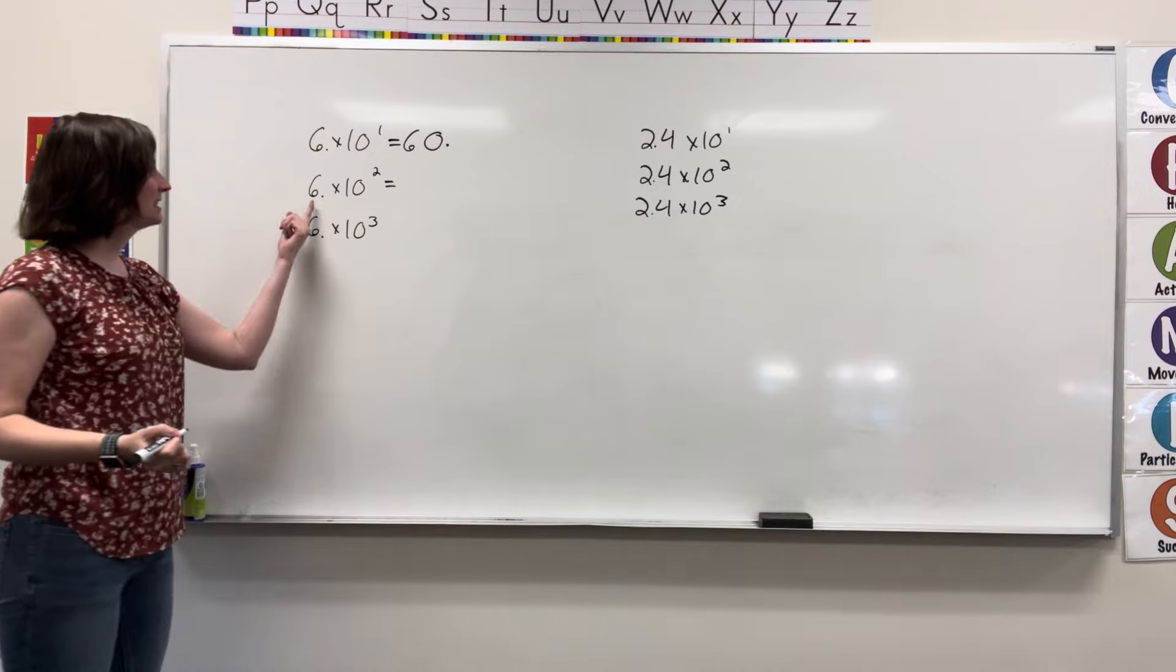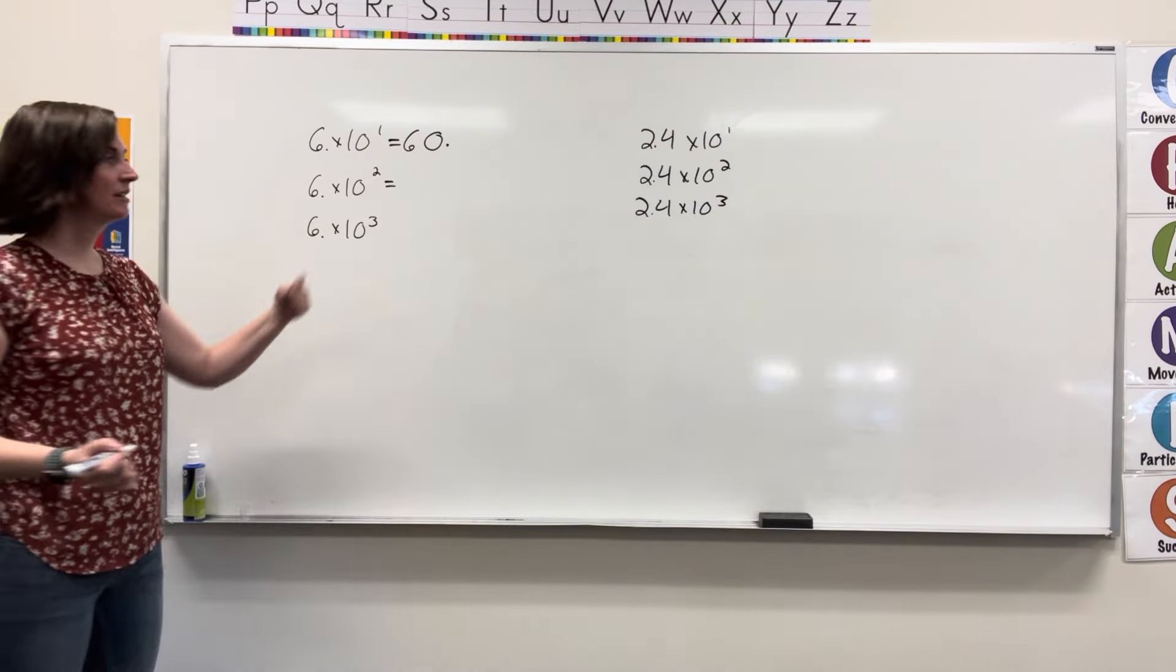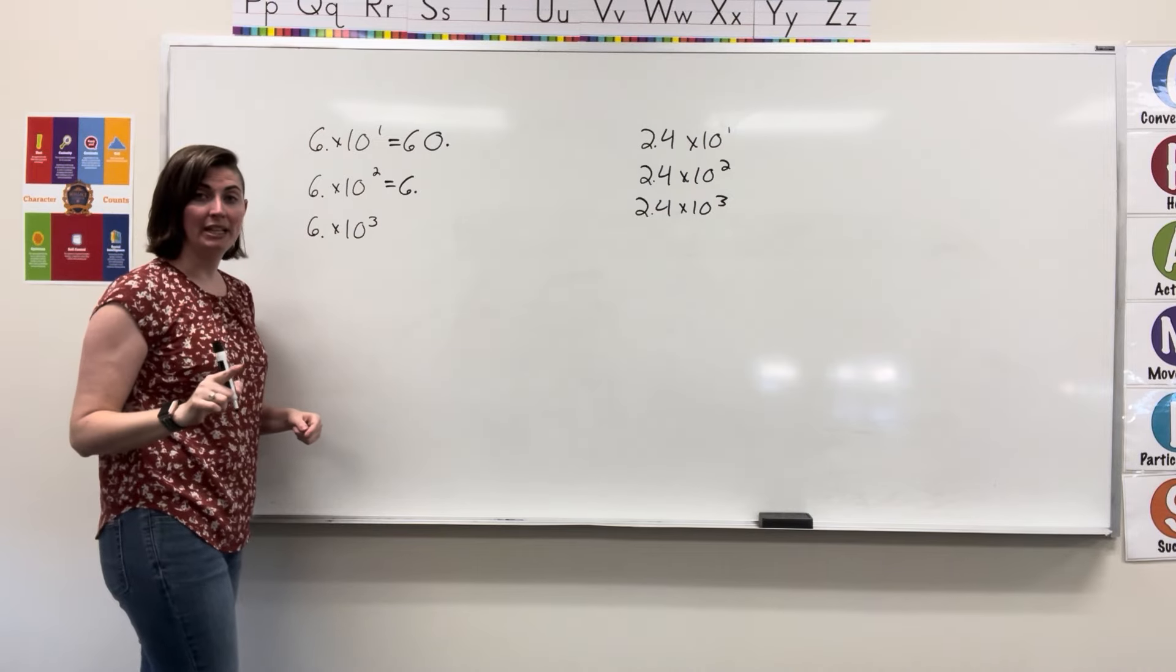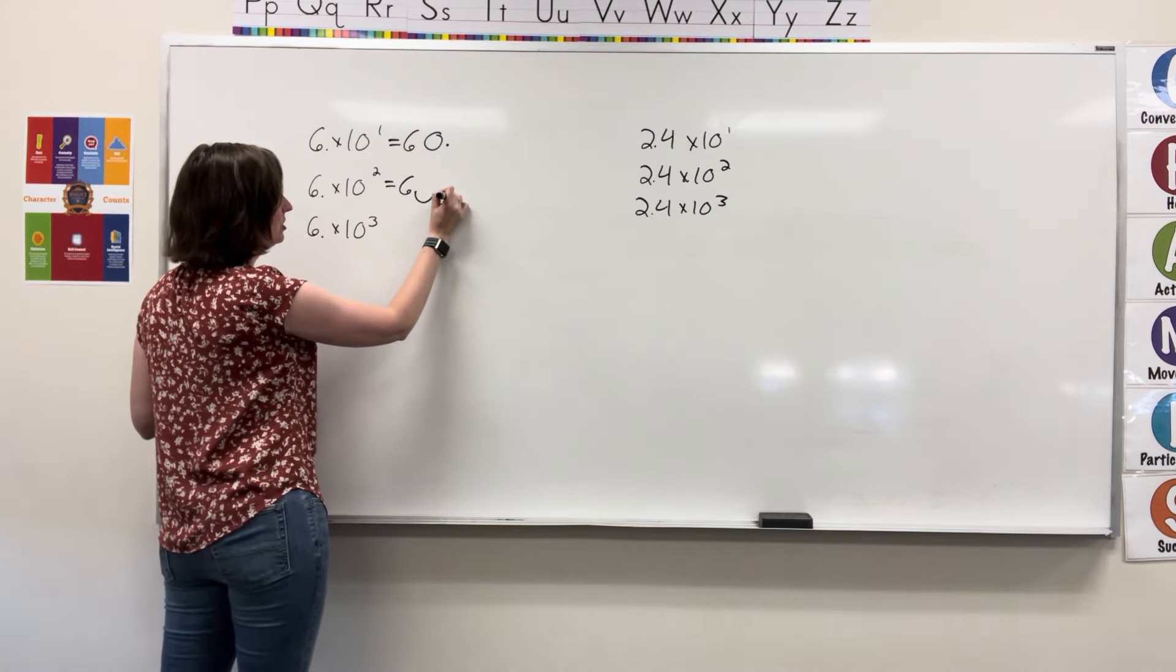Looking at our next problem, 6 times 10 squared. So, that means our decimal is going to move two places to the right, one, two.